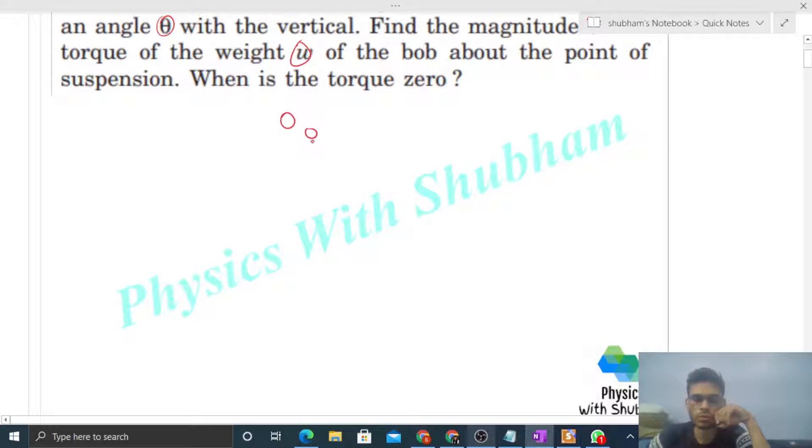So, let's say a point of suspension at point O, and there is a length l ka pendulum, this is the bob. Initially, if we pull it so that it is making an angle theta with the vertical, right, angle theta. At this position, you have to find out the torque of weight. The weight will be acting vertically downward.